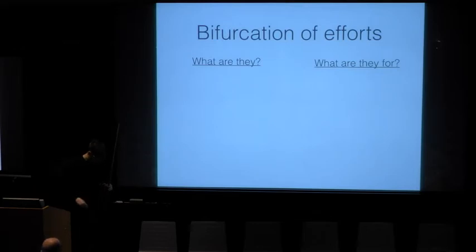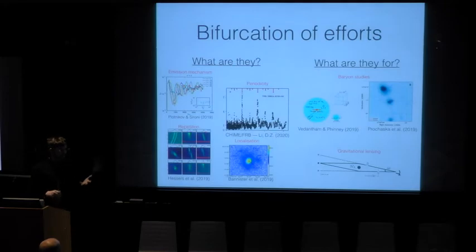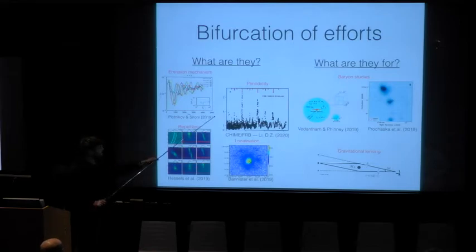So Ido mentioned yesterday the sort of bifurcation of efforts, where all relevant FRB questions kind of fall into these two broad silos at this point. You know, what are FRBs and what are they for? In the former category, we have all of the stuff we've been talking about this week. The title of the workshop is the astrophysics of FRBs. So, you know, emission mechanism, what is the origin of the periodicity, what is the statistics and prevalence of repetition, what are the host galaxies like, and what are the local environments like within the host galaxies.